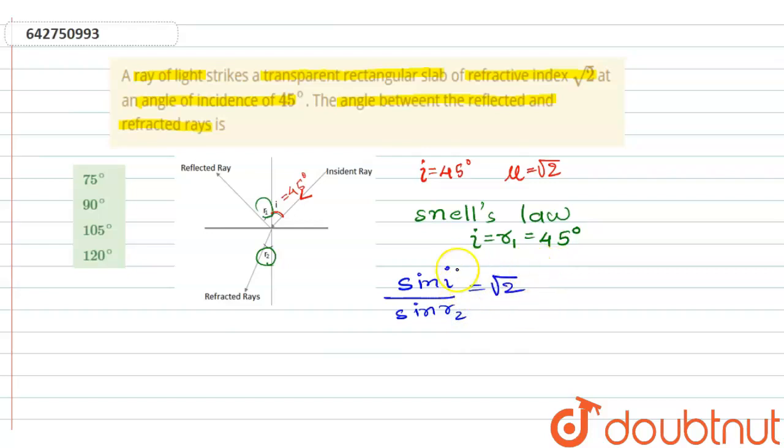So we know i. Sin 45 degrees divided by sin r₂ is equal to root 2. So we will get from here r₂ is equal to 30 degrees.